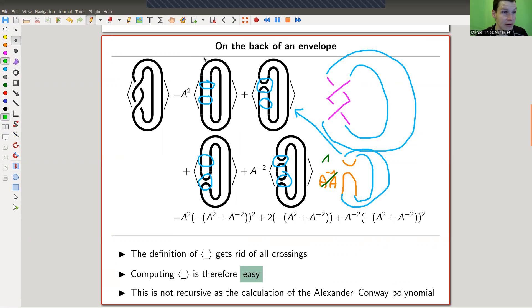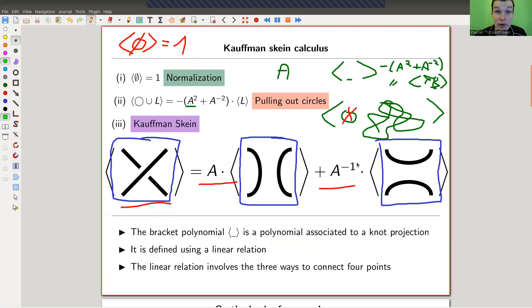I see a bunch of circles, as you can see. So here I have two circles, here I have one circle, here I have one circle, here I have two circles, and I just get the circle scalar to the corresponding power. Whatever you get is a polynomial in A and A inverse. So that will be an invariant of the knot. And it's super easy to compute. Just take your knot, write down all the resolutions horizontal-vertically, keep track of the scalars A, pull out all the circles, and that's it. This linear relation in the crossing gets rid of the crossing.